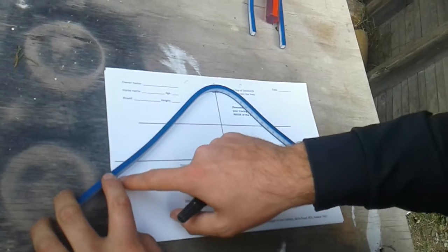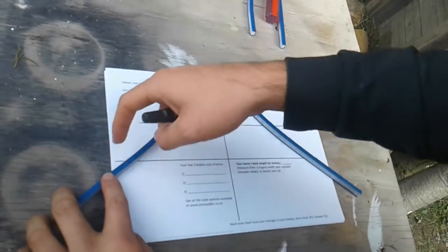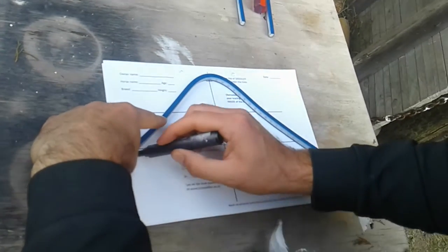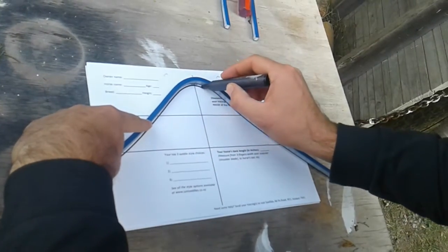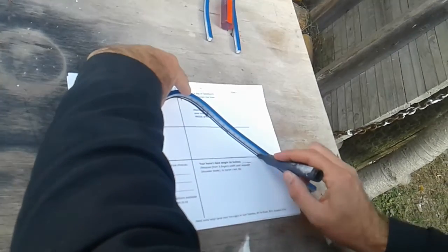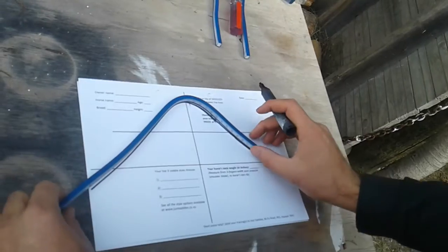Make sure that you trace on the inside of the line. If you go on the outside you'll get a skewed reading. So what I'm going to do is trace right through there.